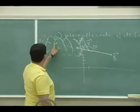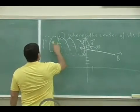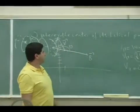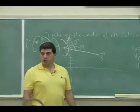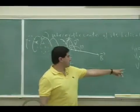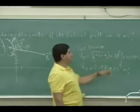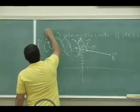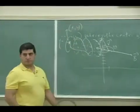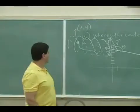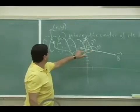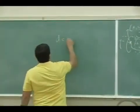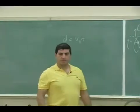The problem gives us a time of 4 milliseconds and asks for the center of the helical path. Since the parallel component is unaffected by the magnetic field and we know the time, we can find the distance traveled along the field direction. The particle is going to end up at some point x, y. The distance it travels is v parallel times t.